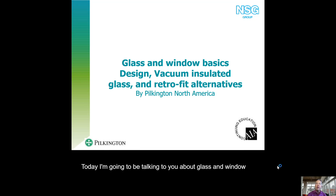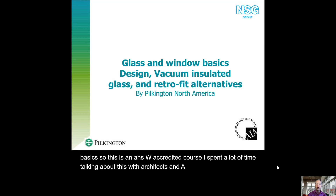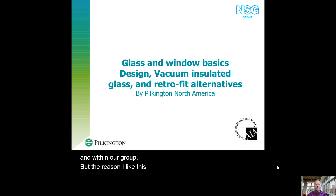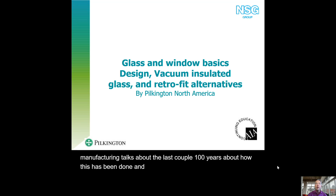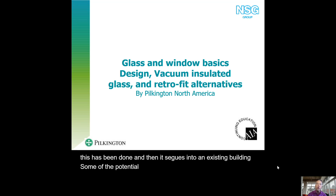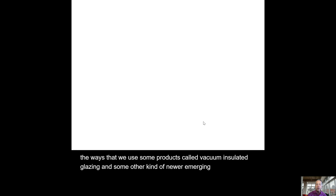This is an AIA HSW accredited course. I spend a lot of time talking about this with architects at different conferences and within our group. The reason I like this course is it's kind of fun — it goes through the history of glass manufacturing, window design, and window manufacturing. It talks about the last couple hundred years of how this has been done, and then it segues into existing buildings, some of the potential treatment options, and one of the ways we use products called vacuum insulated glazing and some other newer emerging technologies to deal with historic restoration.